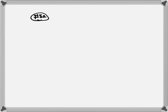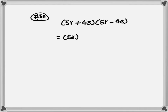Now let's look at number 52. We have 5R plus 4S times 5R minus 4S. Again, the numbers inside the parentheses are exactly the same and the signs are different. So all you need to do is square the first number, square the last number, and put a minus in between. 5R squared becomes 25R squared, minus 4S squared becomes 16S squared.